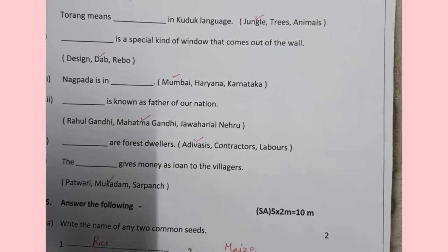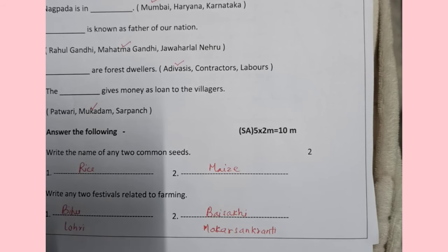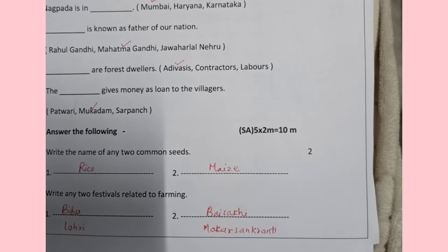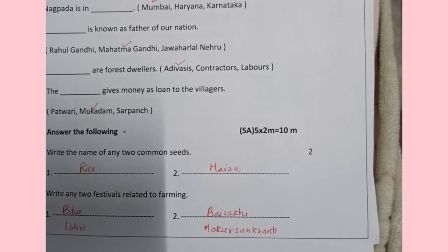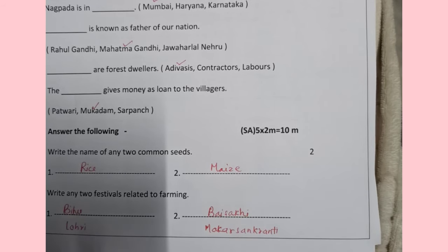Write the name of any two common seeds: rice and maize. Write any two festivals related to farming: Bihu, Lohri, Baisakhi, or Makar Sankranti — you have to write only two.